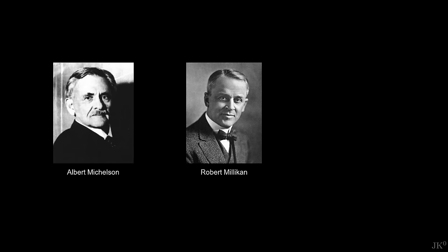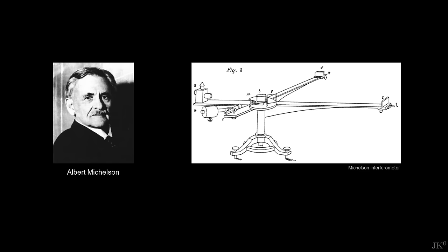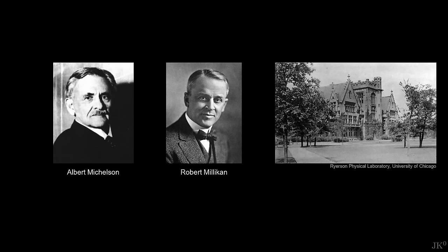Robert Millikan received his doctorate in 1895 and then moved to Germany to master experimental physics in Berlin and Göttingen. Millikan's scientific hero was Albert Michelson, famous for his precision instruments and later for the historic Michelson-Morley experiment. Michelson invited Millikan back to the U.S. to join him at a newly established lab at the University of Chicago, where Millikan became an assistant professor and reproduced many of the key experiments performed in Europe, in particular those by J.J. Thomson in England.